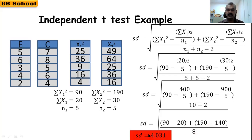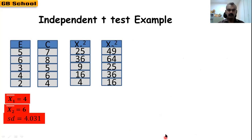This gives us SD = 1.581. Wait — the computed standard deviation of the difference is approximately 4.031. Now we know x̄₁, x̄₂, and SD, so we can use these in the t-test formula.